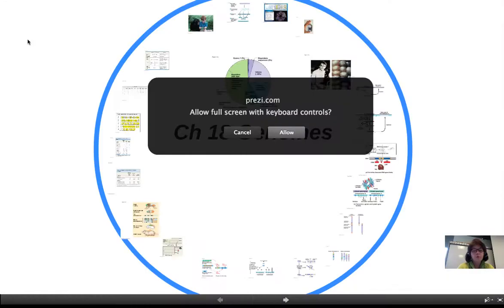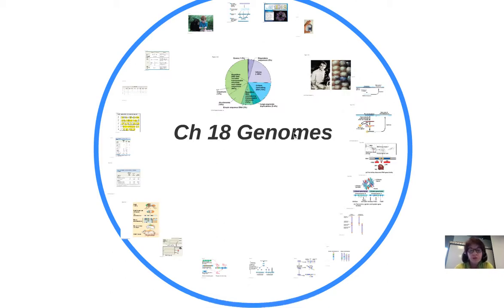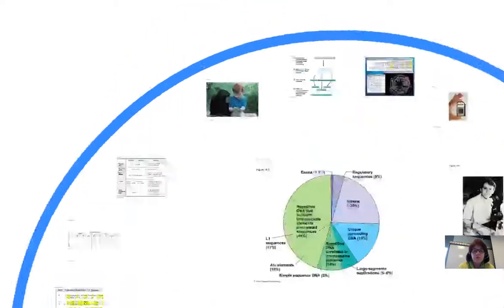We are skipping chapter 17 about viruses — we'll add that in right before we do immunology. We're going to jump over to chapter 18, which is a hodgepodge of somewhat connected ideas about genomes and perhaps the evolution of the genomes. So let's jump right in.